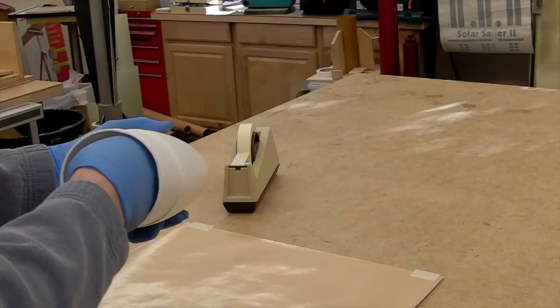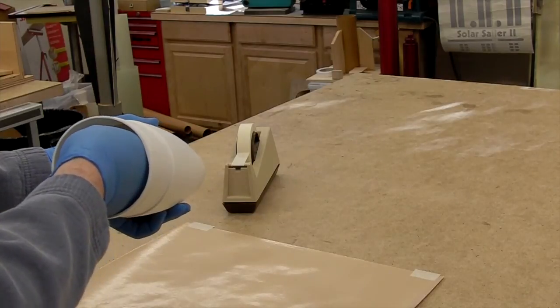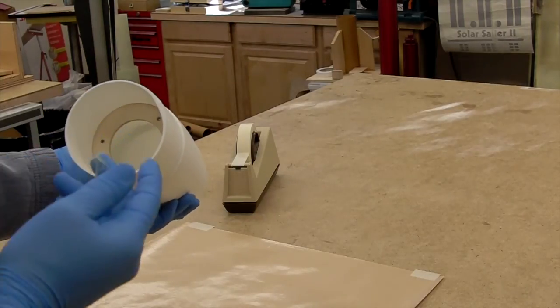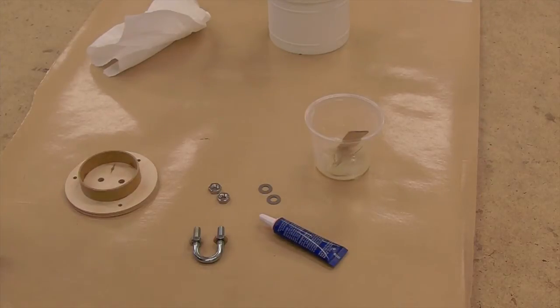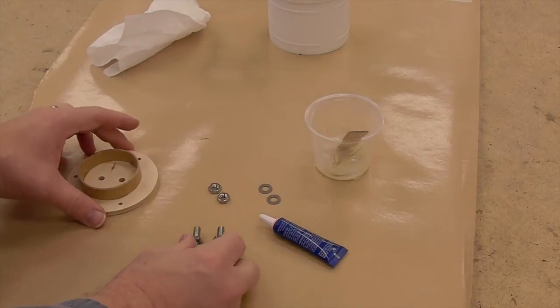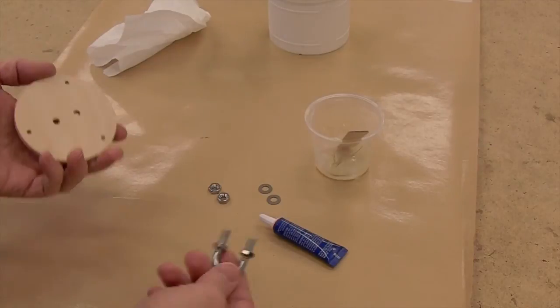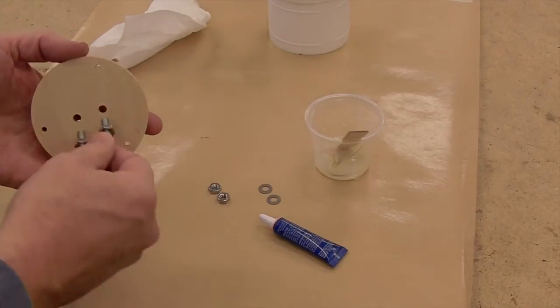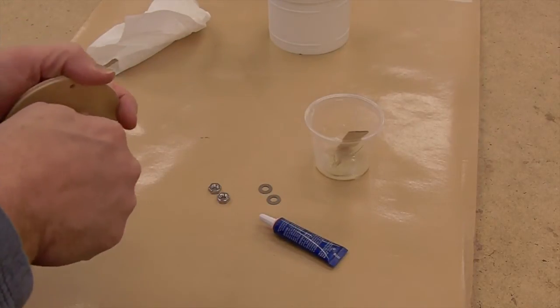You can feel with your finger the fillet as it smooths around. And while the epoxy on the ring is curing, we'll go ahead and assemble the base using a small U-bolt through the holes that we drilled.